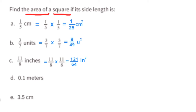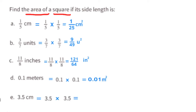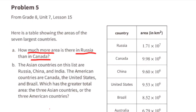Part D: side length is one-tenth meters. One-tenth times one-tenth gives an area of one-hundredth square meters. Part E: side length is 3.5 centimeters. 3.5 times 3.5 equals 12.25 centimeters squared.